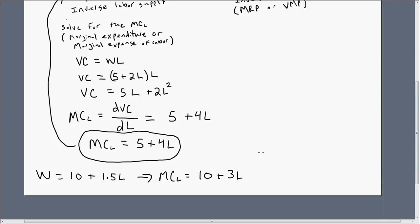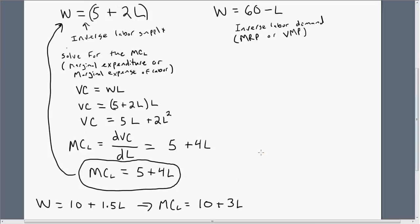The next thing we want to do is solve for the equilibrium level of employment. The monopsonist is going to hire workers up until the point where the marginal cost of labor equals the marginal revenue product, which is just the 60 minus L equation.